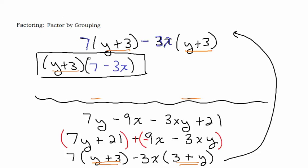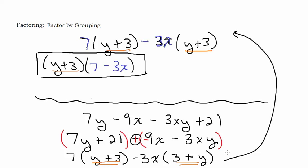That problem showed us two things that can happen with factor by grouping. First: you could have a minus sign between your two groups, and you fix that by changing it to plus a negative. Second: sometimes the order the terms are given in doesn't produce a working grouping, and you can fix that by rearranging the terms. That's a little introduction to factor by grouping — if I do different kinds of factor by grouping I'll save that for a different video. I hope that helped.